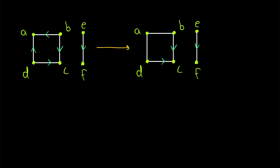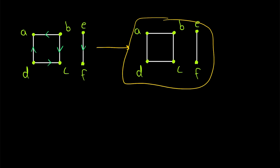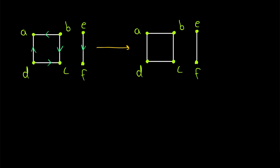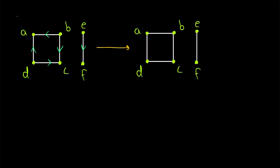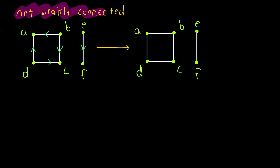The underlying graph of a directed graph is created by just getting rid of the direction on the edges, returning to an undirected graph. And of course, as we could clearly tell, the underlying graph is disconnected. There's no way to get from vertices in this component to vertices in this component. And so this directed graph is not weakly connected. And so if a directed graph is not weakly connected, we of course call it disconnected.